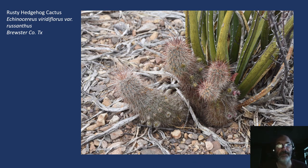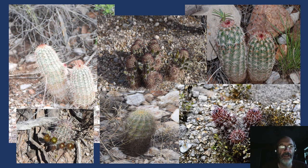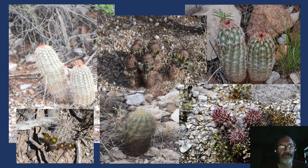Then we have one of the viridifloris group, variety rusanthus, the rusty hedgehog cactus — you can see the reddish central spines there. I put this one out by itself because it's one of my favorites. There's a lot of variety in viridifloris, with many different named varieties. Many of them are found in particular localities in West Texas, showing a nice range of different spination and colors. This is another one that's nice to keep in your garden just for the variety it provides.